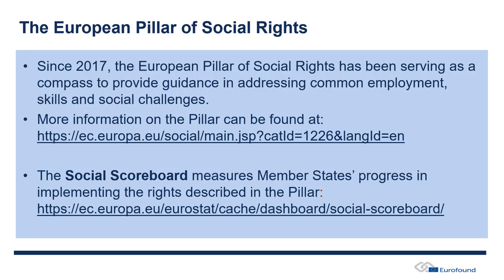These statements are linked to specific targets to be achieved by 2030. Progress towards achieving these targets is measured in what is called the social scoreboard — a set of indicators that measures whether we are making progress towards these goals. You can find more information and background on the pillar and this set of indicators via the links provided.